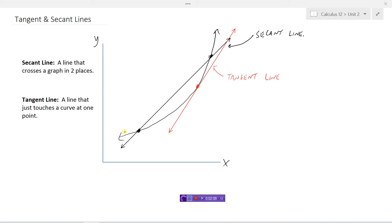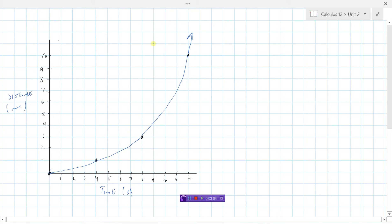Let's see what the significance of these two lines are, the secant line and the tangent line, if we're to look at a distance time graph. Here's a situation, I've got a graph plotted here. I've got distance on my y-axis and time on my x-axis.